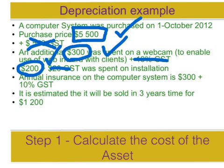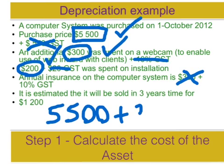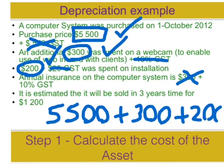The prepaid insurance on the computer system is not a cost incurred in getting the asset into a condition ready for use — it's an ongoing cost and will be expensed separately, so we exclude that. So our total cost is $5,500 for the purchase, plus $300 for the webcam, plus $200 for installation, giving us a total of $6,000.